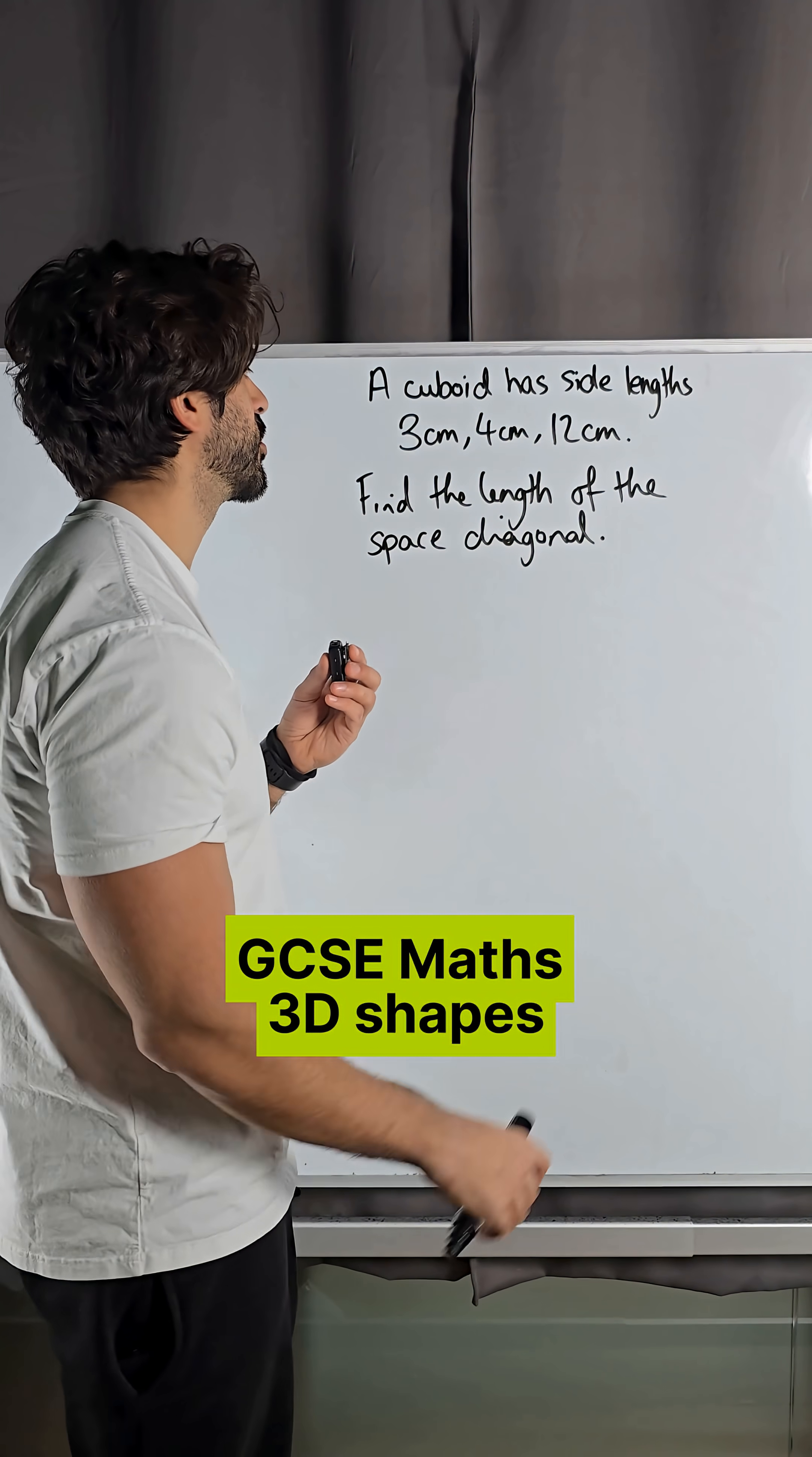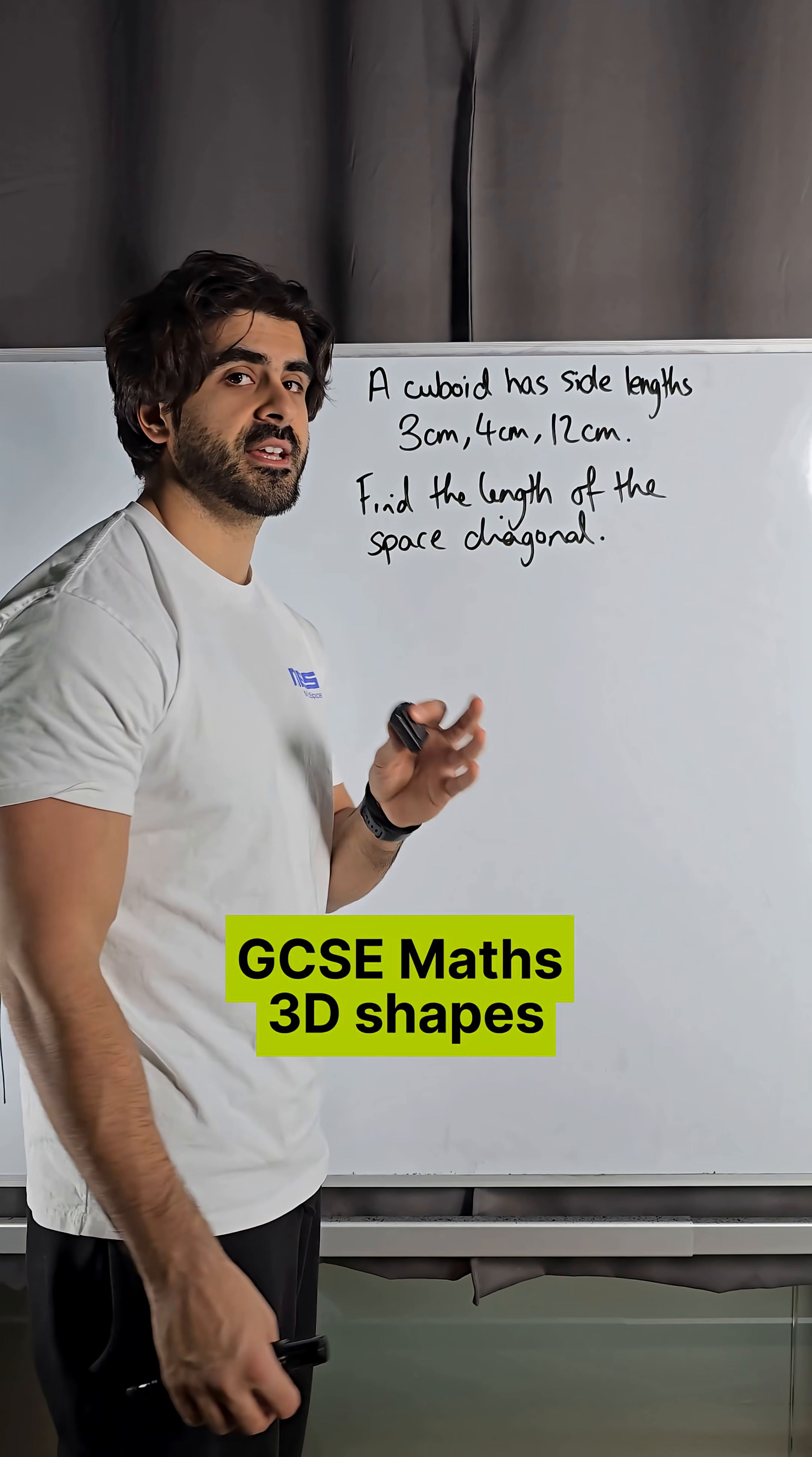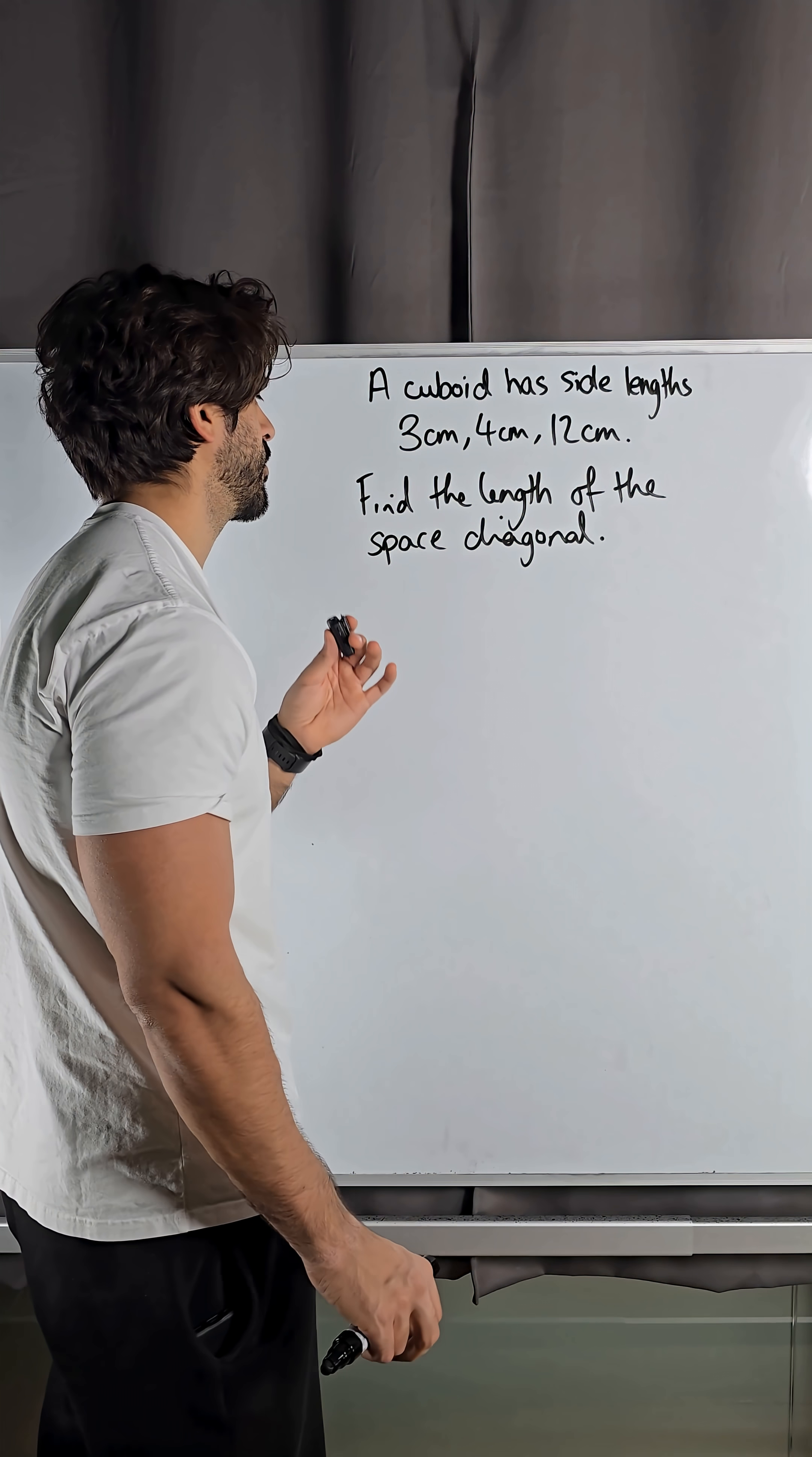This 3 mark 3D trigonometry GCSE question can actually be answered in less than 9 seconds. So it says a cuboid has side lengths 3, 4, 12, find the length of the space diagonal.